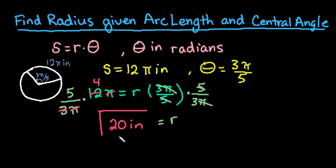So the radius for this particular circle is 20 inches when it has an arc length of 12 pi inches and a central angle of 3 pi over 5.